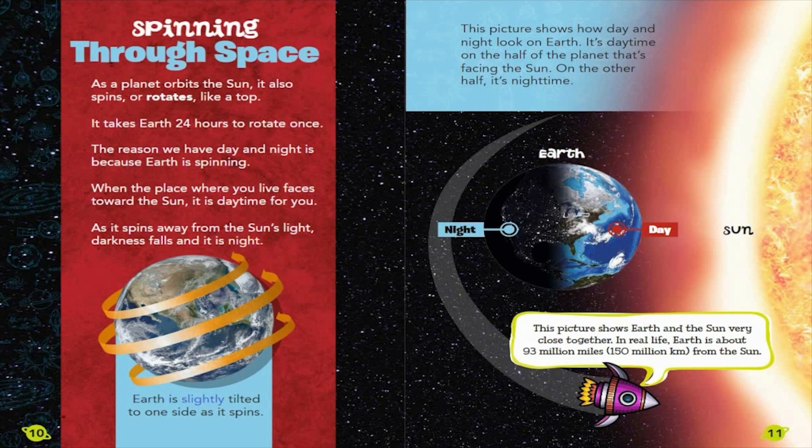Earth is slightly tilted to one side as it spins. This picture shows how day and night look on Earth. It's daytime on the half of the planet that's facing the Sun. On the other half, it's nighttime. This picture shows Earth and the Sun very close together. In real life, Earth is about 93 million miles, 150 million kilometers from the Sun.